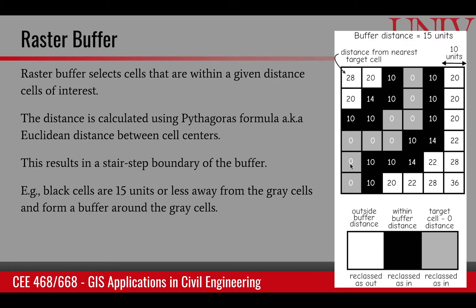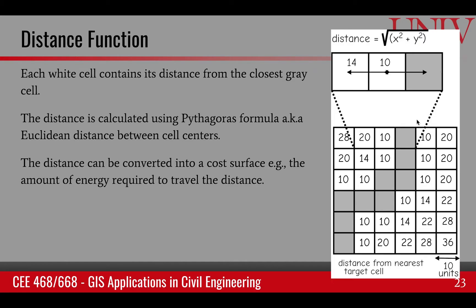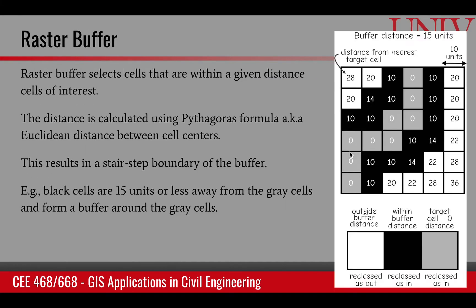First, let's talk about the raster buffer. Using the same example from earlier, if we have this raster feature, we can create a buffer at a fixed distance using the distance function we already know. If we create a buffer for distance equal to 15, any cell with a distance of 15 or less is marked dark. These dark cells form a 15-unit buffer around the gray cells.